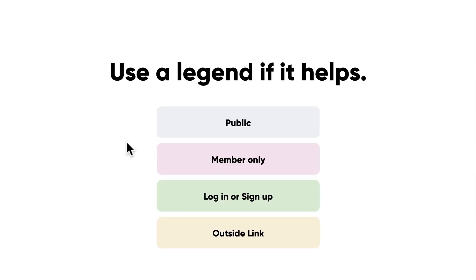You could use a legend if you'd like — it's totally up to you, that's another preference. If you're sharing it with a lot of people, it may help if you have a lot of symbols or colors. I like to use colors because it helps signify whether a page is public or member-only. If it really helps get across what you're trying to say with your product and your sitemap, use a legend.